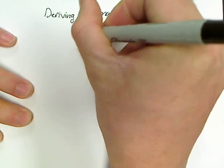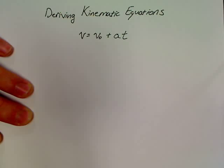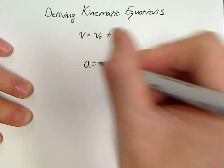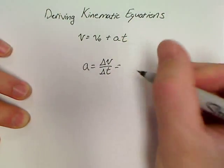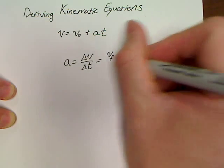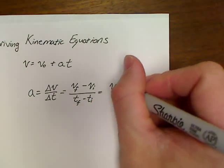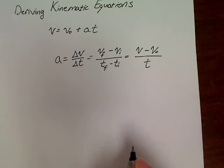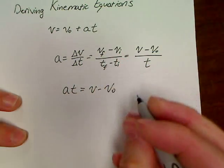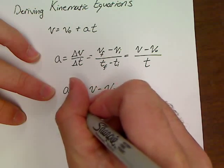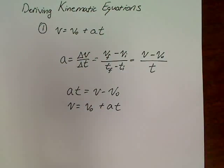The first kinematic equation we know is V equals VO plus AT. It's really the simplest one in terms of where it came from. All this is is your acceleration equation. Acceleration is equal to a change in velocity over a change in time, where we say velocity final minus velocity initial over time final minus time initial, which gets rewritten as velocity minus velocity initial over time. So AT equals V minus VO, and just do a little switcheroo and you've got V equals VO plus AT. That's what we usually call the first of the kinematic equations.